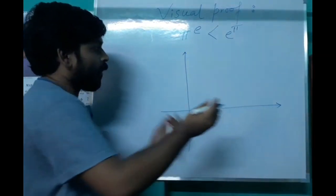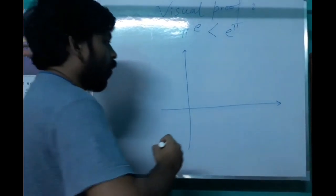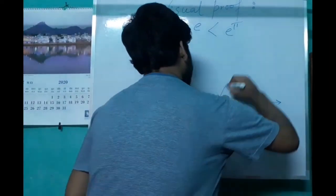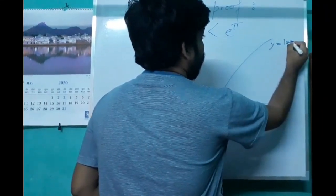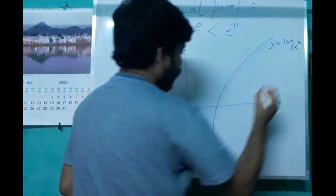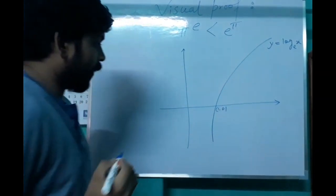This is the x-axis and y-axis. First we draw the graph of log x. This is the graph of log x and this is the point 1 comma 0.